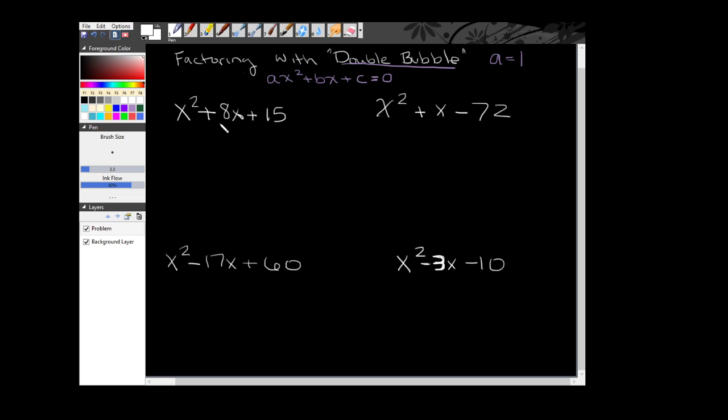Now there are four types of problems when we are factoring with double bubble, and they all have to do with the signs. So if you notice, my first example has plus plus, and then there's a plus minus, a minus plus, and a minus minus. The positionality of those signs is actually very important when figuring out how to lay out your problem. So a lot of my discussion today will be discussing those signs and how those signs affect what goes in our parentheses.